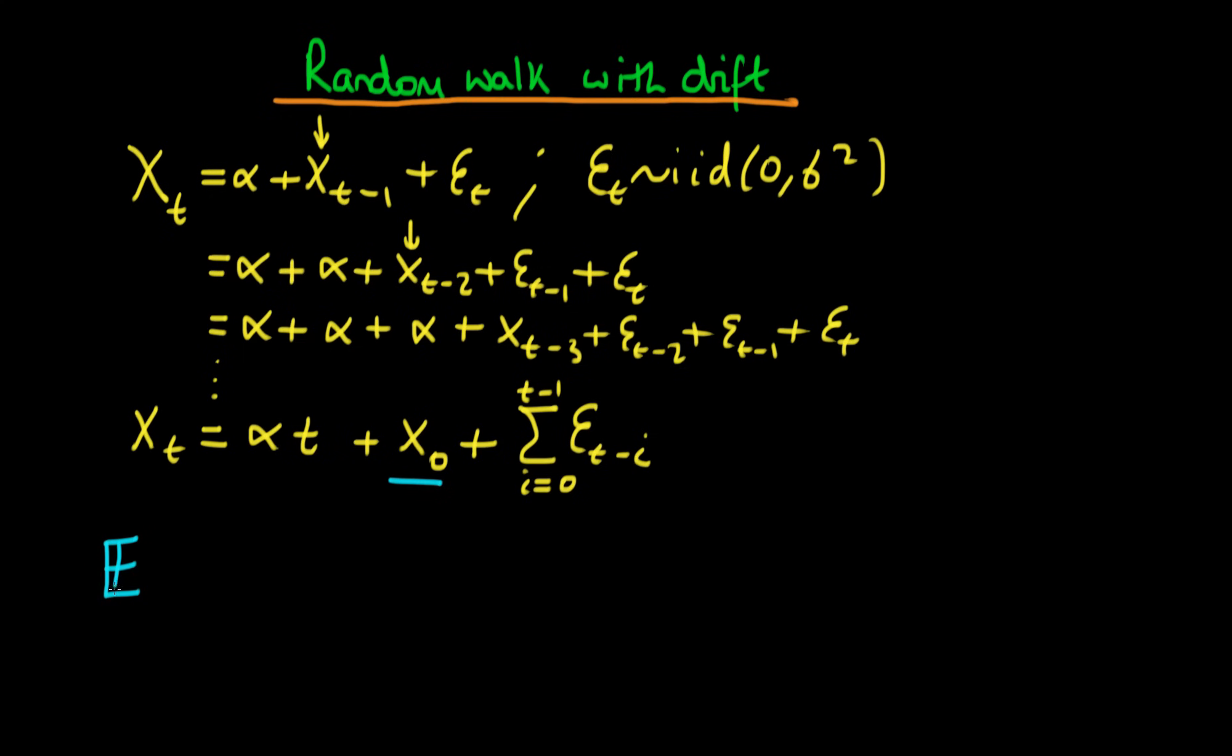Well if we take the mean of this process we have that the expectation of xt is just going to be equal to this first term here which is just deterministic it's just going to be alpha t and if we assume that the expectation of x0 is 0 or x0 is fixed at 0 then that term doesn't contribute anything so we can forget about that